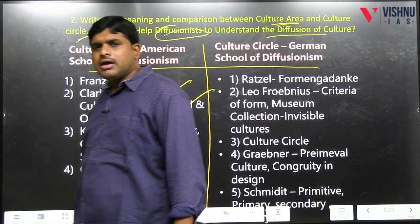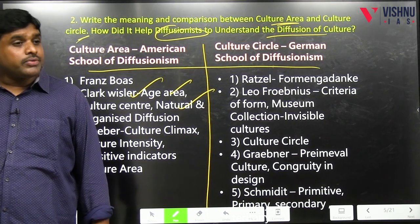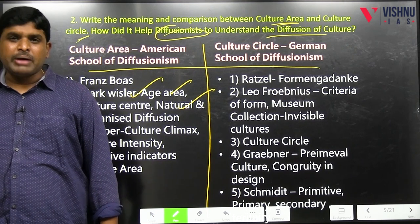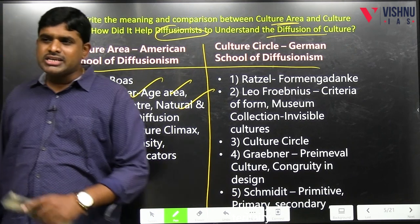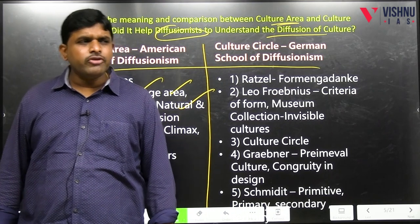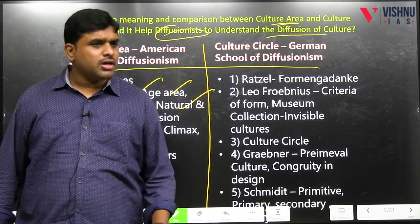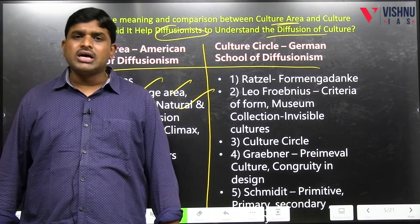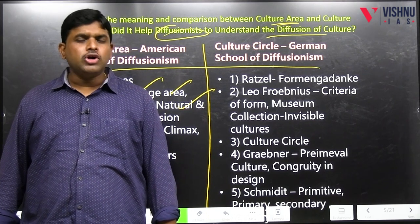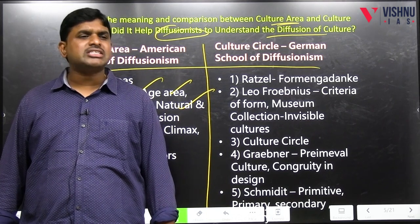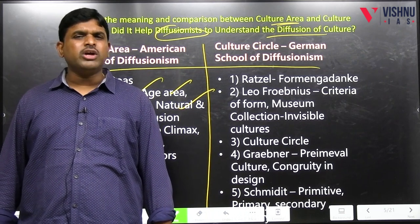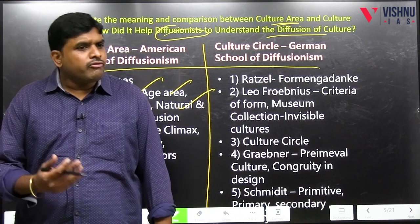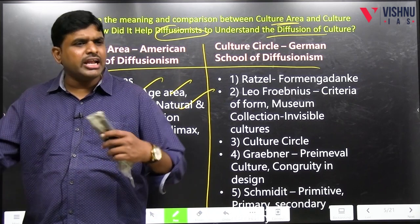Clark Wissler also discussed natural diffusion and organized diffusion. Natural diffusion: by trial and error method — if anything is getting diffused for a purpose, it is called natural diffusion. Organized diffusion: if it is getting diffused because of force, it is called organized diffusion. Example: Aurangzeb's Jizya attack — two-thirds of food grains given as tax if you are non-Muslim, so the poor person would convert religion because for him survival is important.